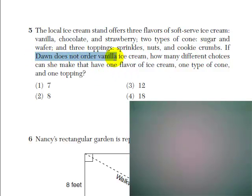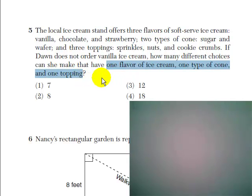If Dawn does not order vanilla ice cream, how many different choices can she make that have one flavor of ice cream, one type of cone, and one topping?